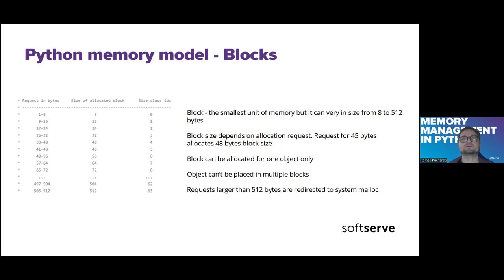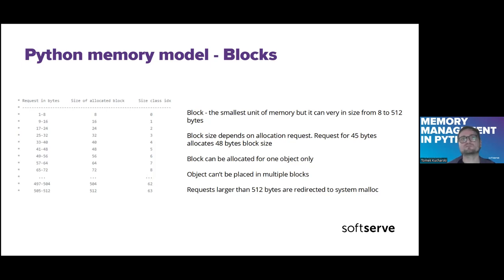What is important from the pool management point of view: the size of the block is not equal to the amount of memory we would like to allocate. For example, if we allocate 45 bytes, we get a bigger block of 48 bytes. A block can be occupied by only one object — there is no sharing of blocks. If we have a bigger object, it can be allocated across multiple blocks.